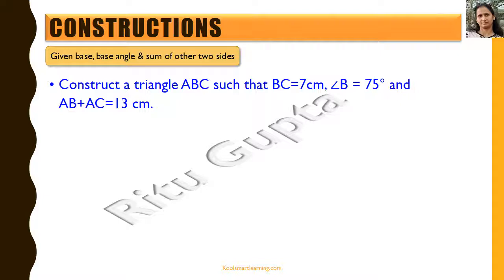We have now constructed triangles using SSS, RHS, ASA, and SAS criteria. Now we look at a different condition: given the base, one base angle, and the sum of the other two sides. We need to construct a triangle with these parameters.